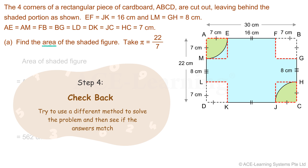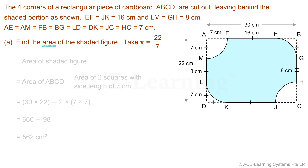Step 4: Check back. Try to use a different method to solve the problem, and then see if the answers match. In the given figure, mark out the unshaded parts of the rectangle and name them as areas P, Q, R, and S. The area of the shaded figure is equal to the area of the rectangle minus the sum of the areas of P, Q, R, and S.